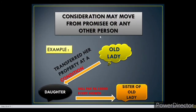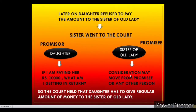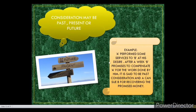The next condition is consideration may move from the promisee or any other person. For example, an old lady transferred her property to her daughter on the condition that the daughter would pay 10,000 rupees every month to her sister. Later the daughter refused to pay. The sister went to court, and the daughter argued what she was getting in return. The court held that consideration may move from any other person, so the daughter was liable to pay.